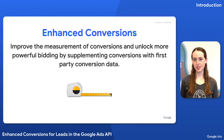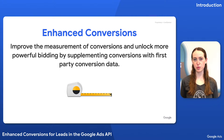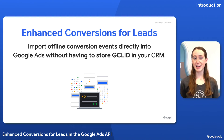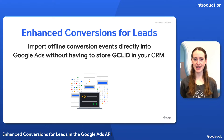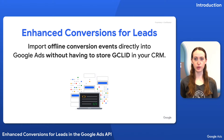Enhanced Conversions is a feature that can improve the accuracy of your conversion measurement and unlock more powerful bidding by supplementing the data provided by your existing conversion tags with hashed first-party conversion data. Enhanced Conversions for Leads is for advertisers that want to import offline or otherwise untrackable conversion events directly into Google Ads for purposes of reporting and optimization.